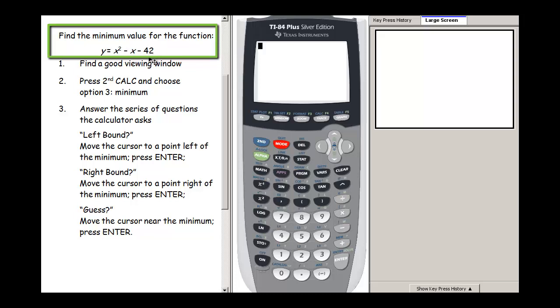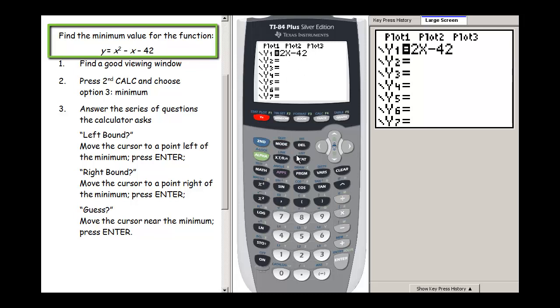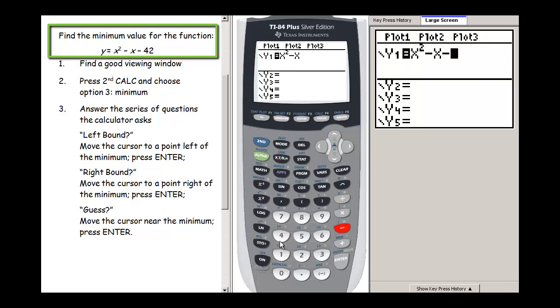So the first thing I'm going to need to do is graph this function. Remember the steps to graphing. We're first going to press y equals and then we're going to put our function in our y1. So let's press clear to clear out our old function. We're going to use this x button here for x, so x squared minus x minus 42.